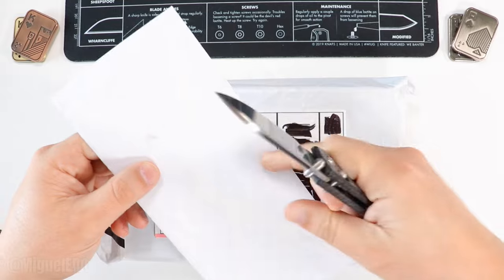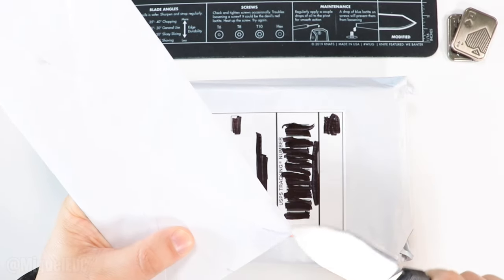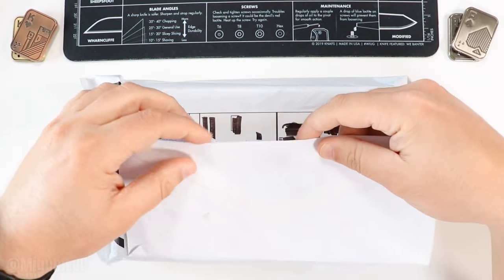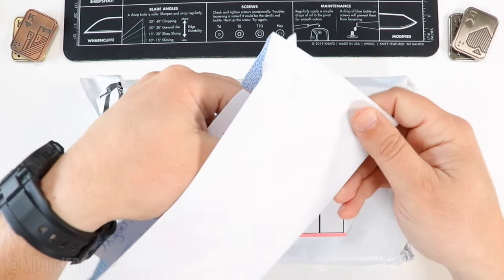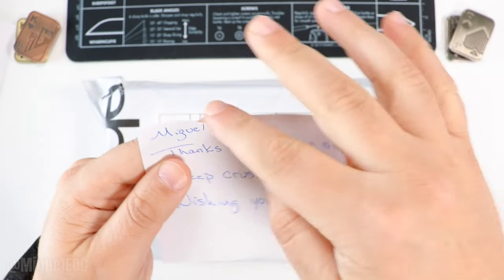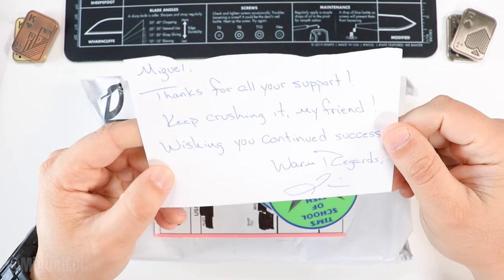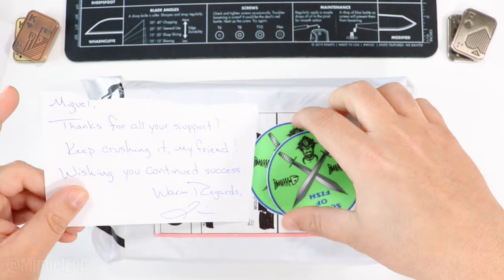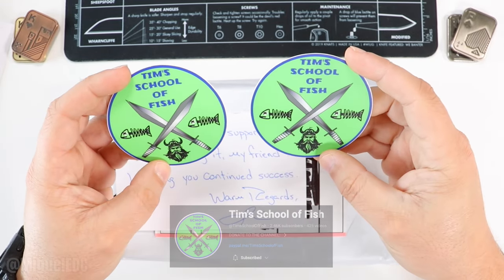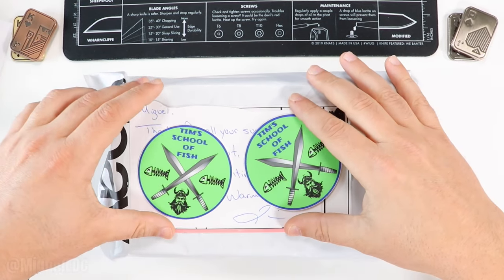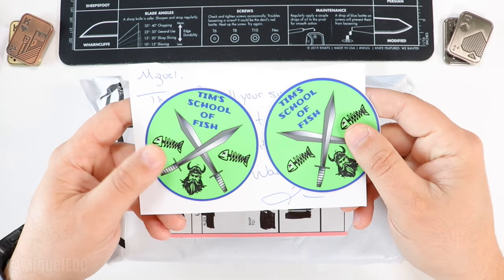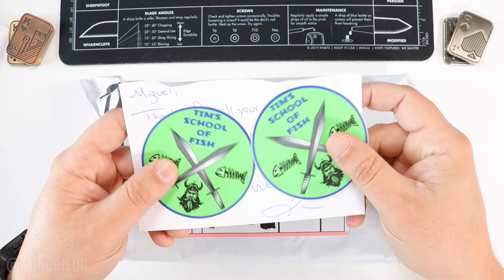Before we get into the package, we got a letter here from Tim School of Fish. Let's crack it open. You know you have a good knife when you add a new shape to the card. Says Miguel, thanks for all the support, keep crushing it my friend, wishing you continued success, warm regards Tim. Tim, you gotta check out his channel, he goes by Tim School of Fish. He just sent me some stickers here, I love it brother, thank you so much. Check out Tim School of Fish's channel, he makes awesome knife content.